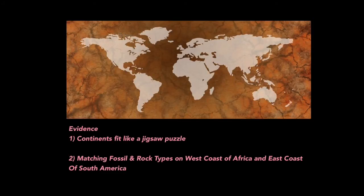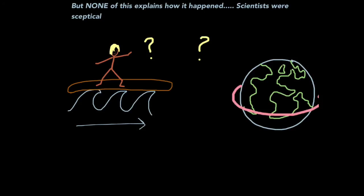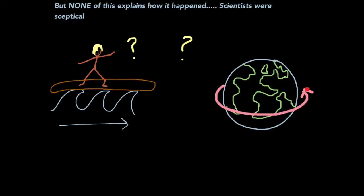These observations certainly piqued scientists' interest, but they did not explain how these features occurred or why earthquakes were happening. Scientists were sceptical of what Wegener proposed. This was partly exacerbated by the fact that he wasn't actually a geologist — he was an astronomer — so some scientists believed he had no right delving into the world of rocks. Wegener's explanations for continental drift weren't foolproof either. One suggestion was that the plates were moved by tidal forces, like a giant rock surfboard on a wave. He also thought that perhaps the Earth's natural rotation was responsible for moving the plates. However, both these ideas were disregarded by scientists as incorrect.